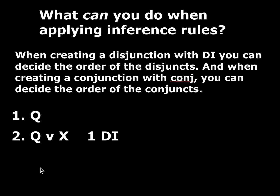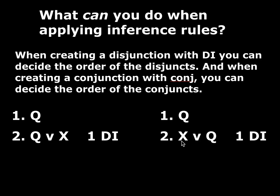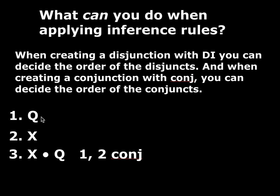For creating a disjunction with disjunction introduction, you can decide the order of the disjuncts. If I have Q, I can make Q or X by DI on line 1, putting the new disjunct on the right — or I could put the new disjunct on the left. Which way you do it depends on which statement you need in order to complete the proof. The same thing applies to making a conjunction: if I'm going to conjoin Q and X, I can get X and Q, or Q and X — I can decide the order of those conjuncts when I put them together.